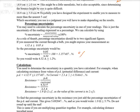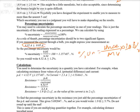Percentage uncertainty is calculated as: uncertainty divided by measured value, multiplied by 100%. For example, dividing the uncertainty by the measured value and multiplying by 100% gives you the percentage uncertainty. Percentage uncertainty must always be expressed to two significant figures. So if you get 1.2%, that is your answer rounded to two significant figures.